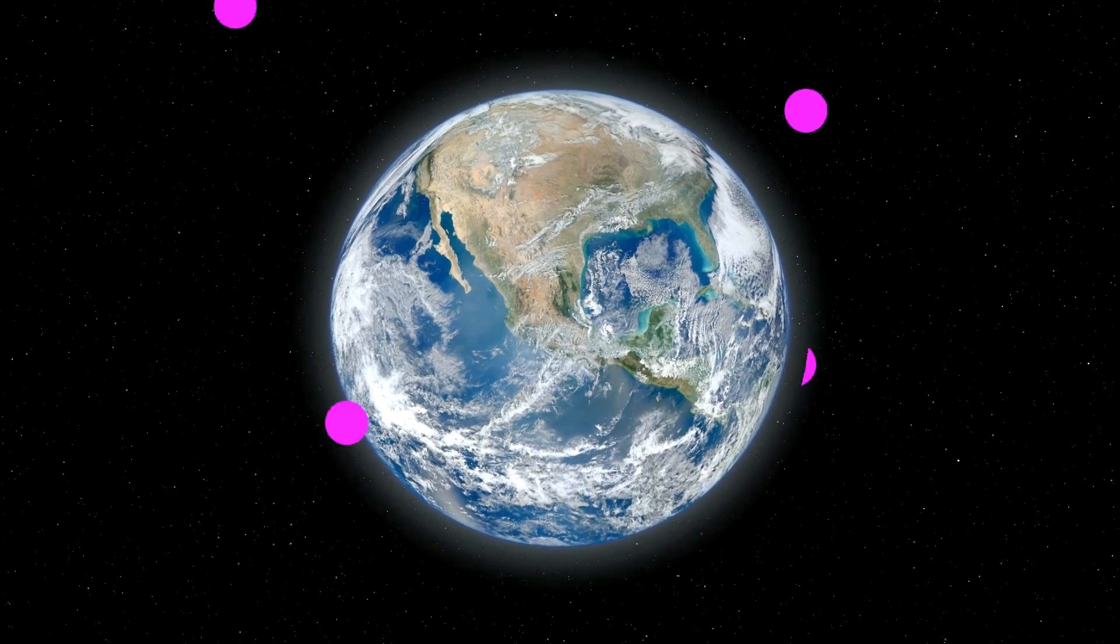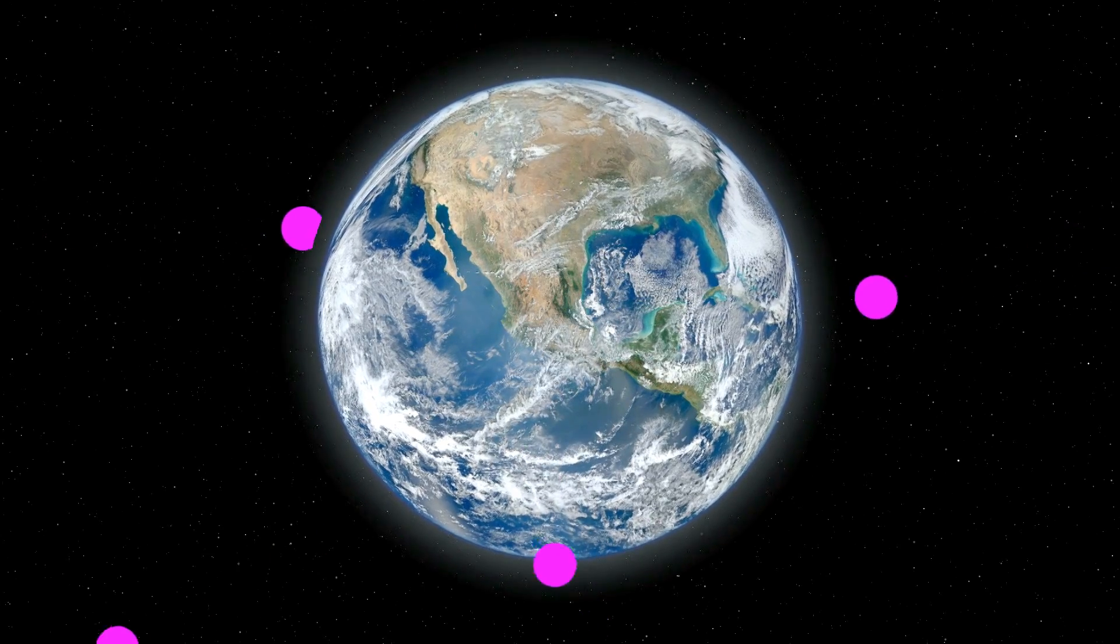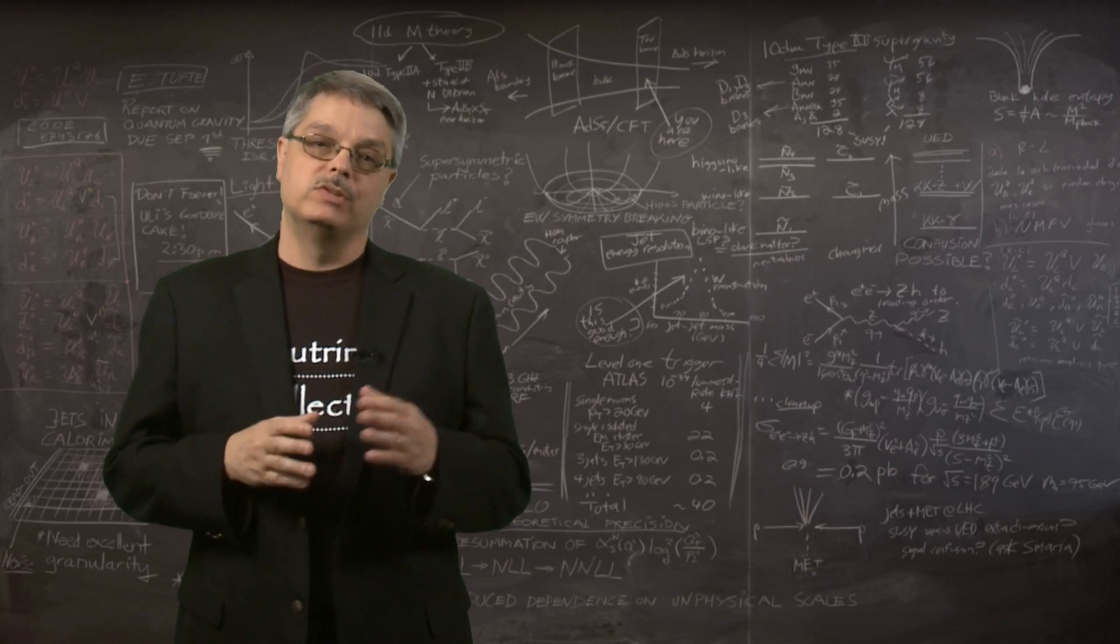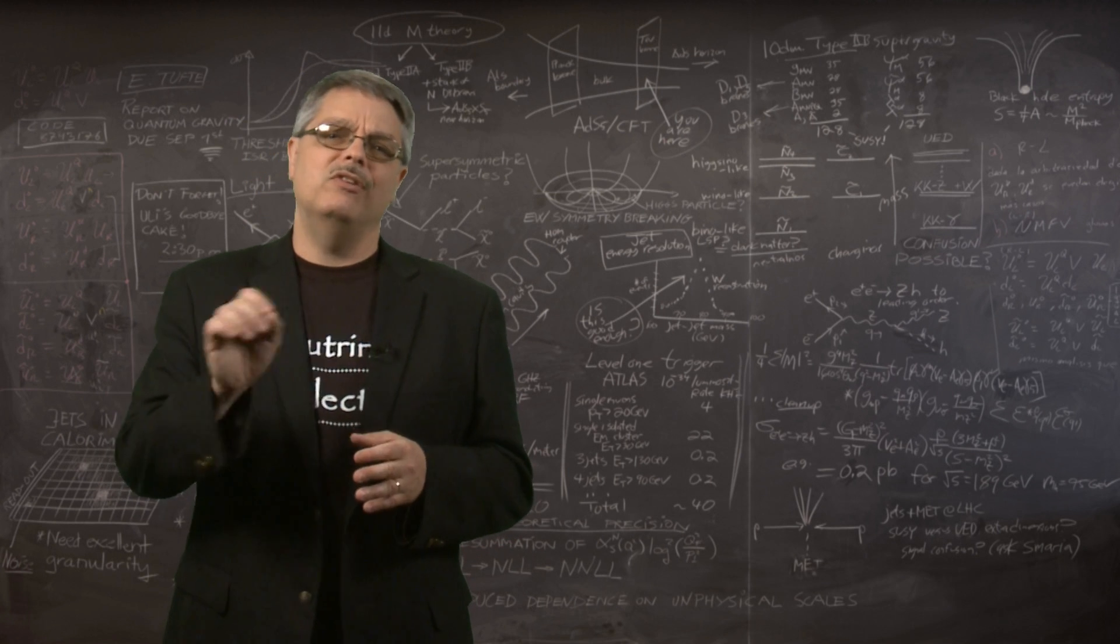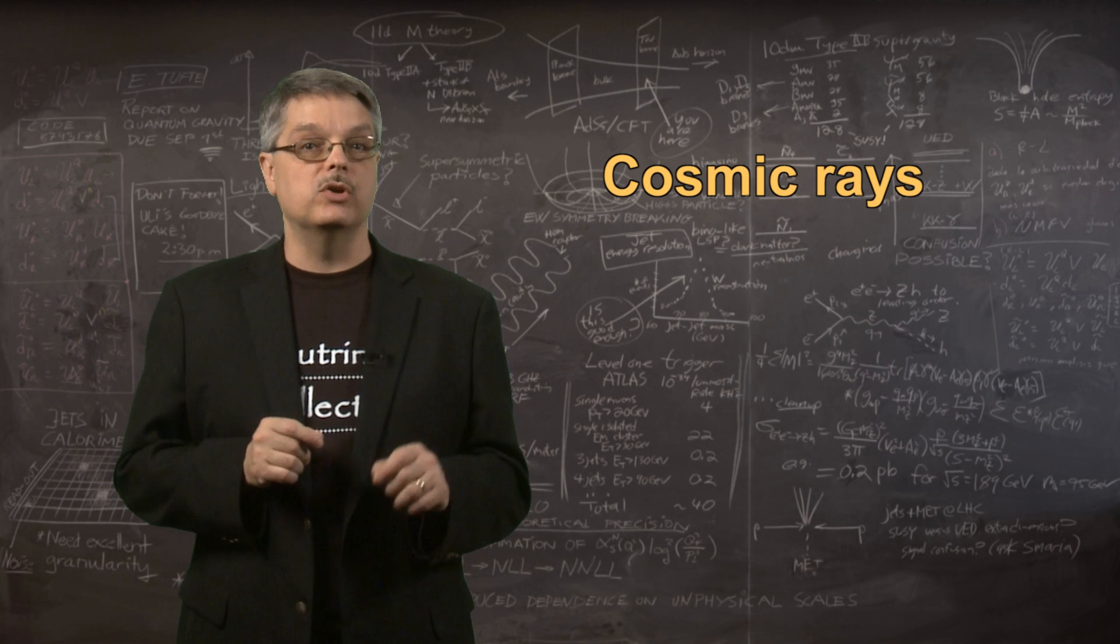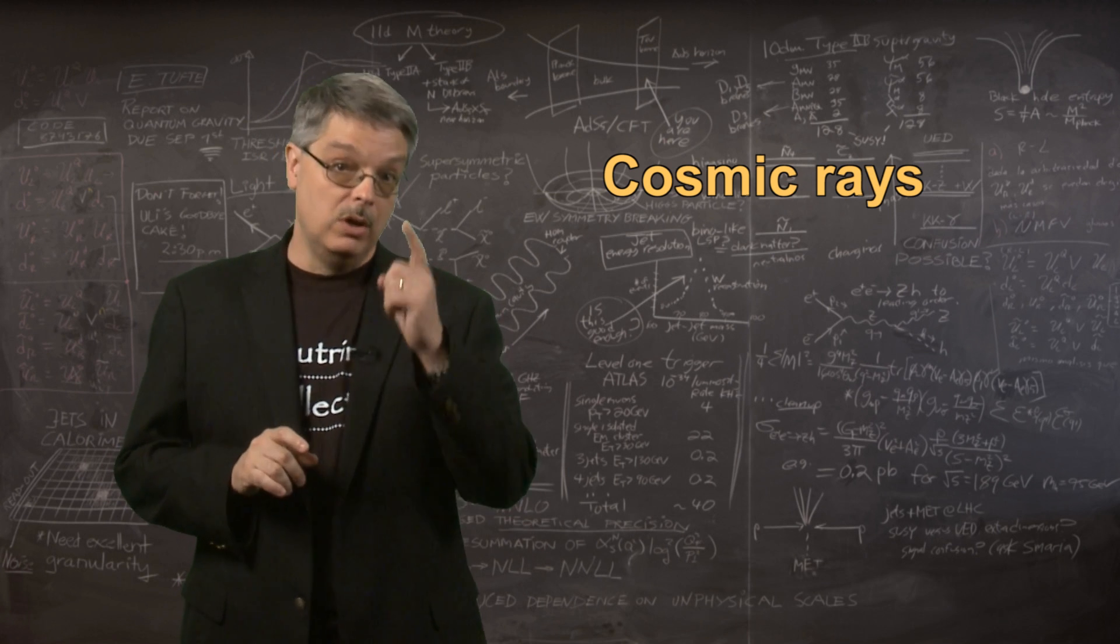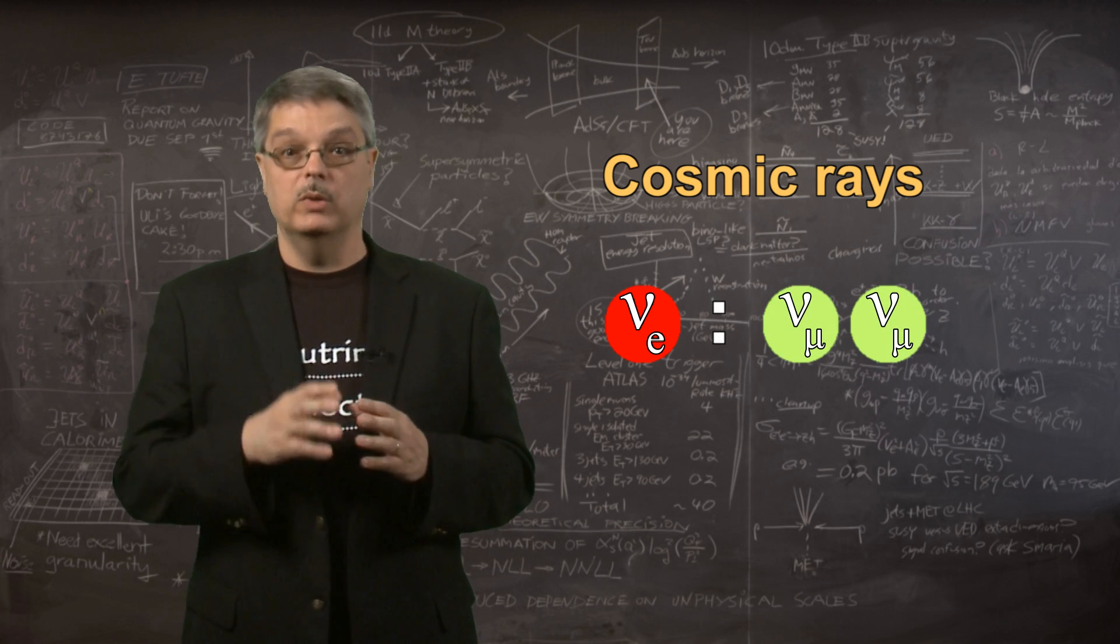Because of how the cosmic rays interact, each electron-type neutrino should be accompanied by two muon-type neutrinos. While the solar neutrino deficit could have been due to improper measurement or calculation, it is very difficult to imagine how neutrinos from cosmic rays could occur in any ratio other than one electron-type to two muon-types.